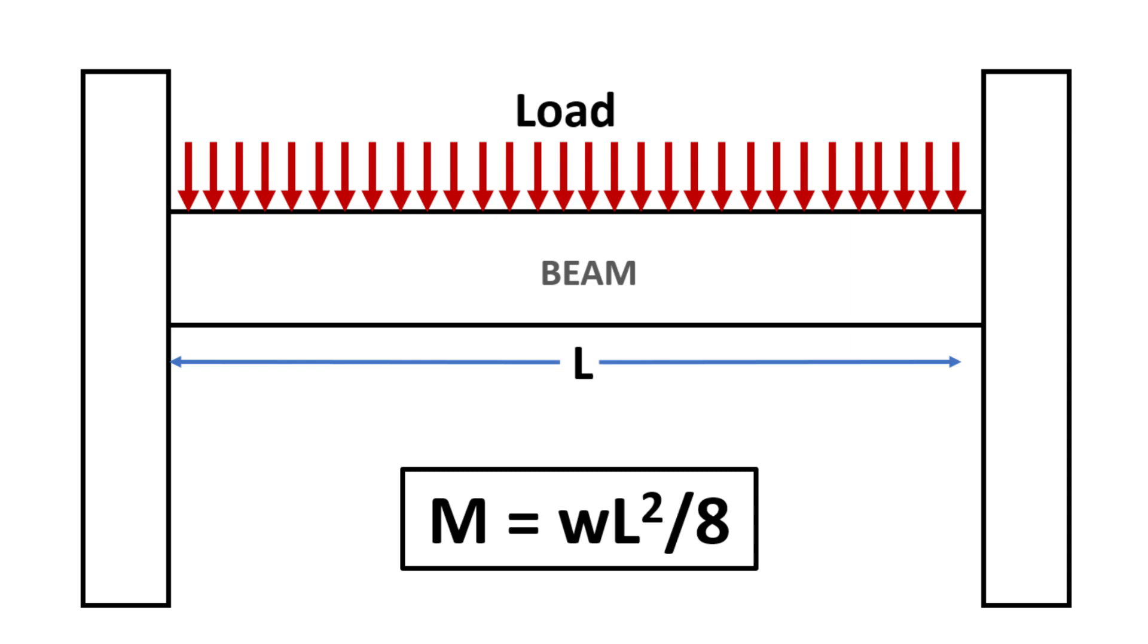Therefore, a larger span for the beam leads to a notable increase in the size, that's the depth of the beam. When it comes to columns, the impact due to increase in length on the total load and column size is negligible as long as the column is short. As a result, columns are generally more cost-effective compared to beams in terms of unit cost.